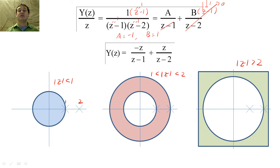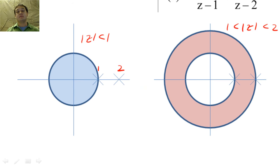We can find the inverse Z transform by using a lookup table. For the first ROC, Y of N will be only left-sided.